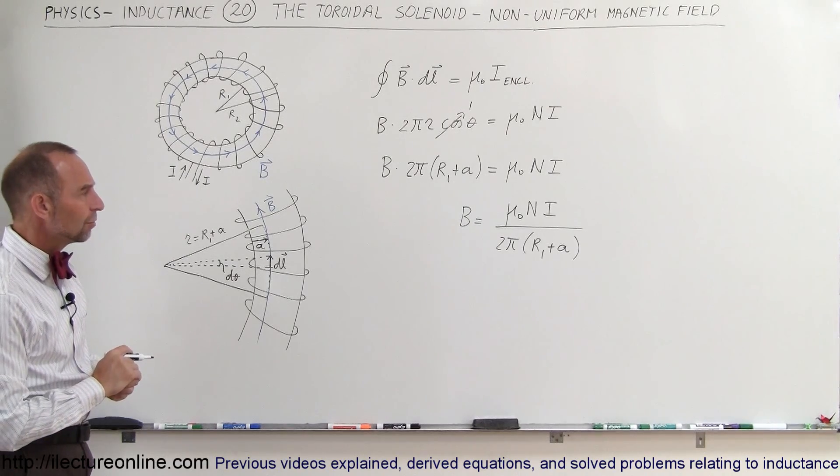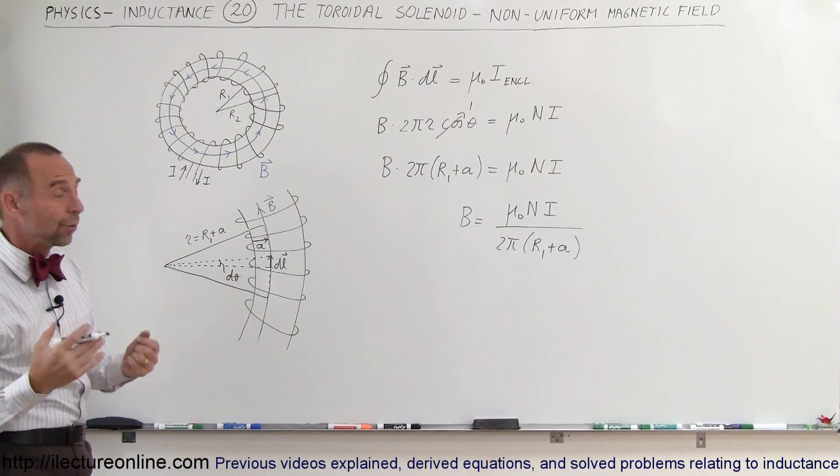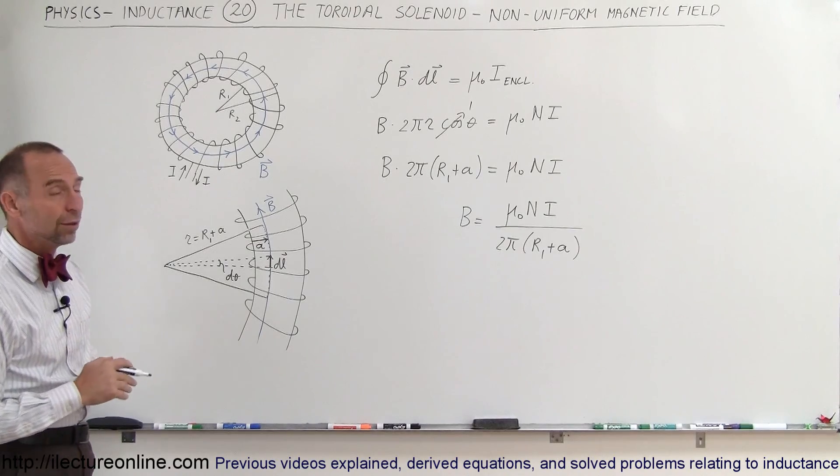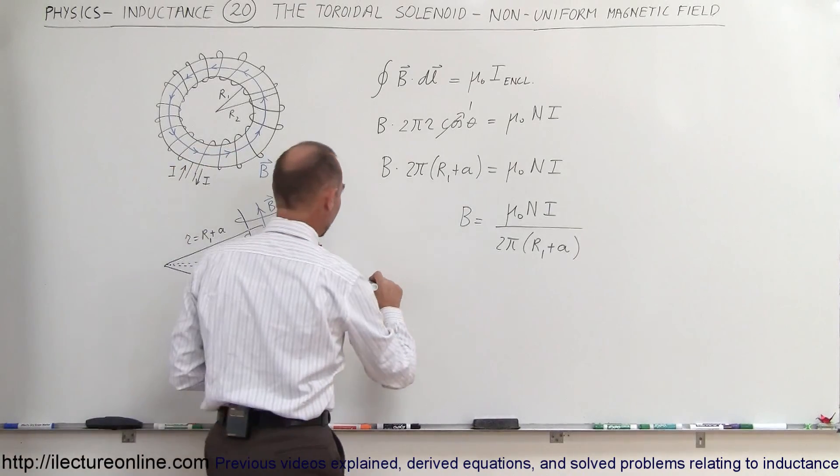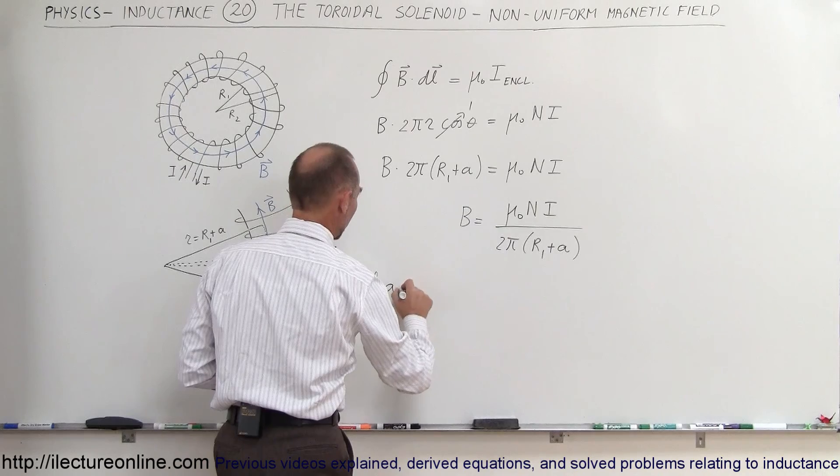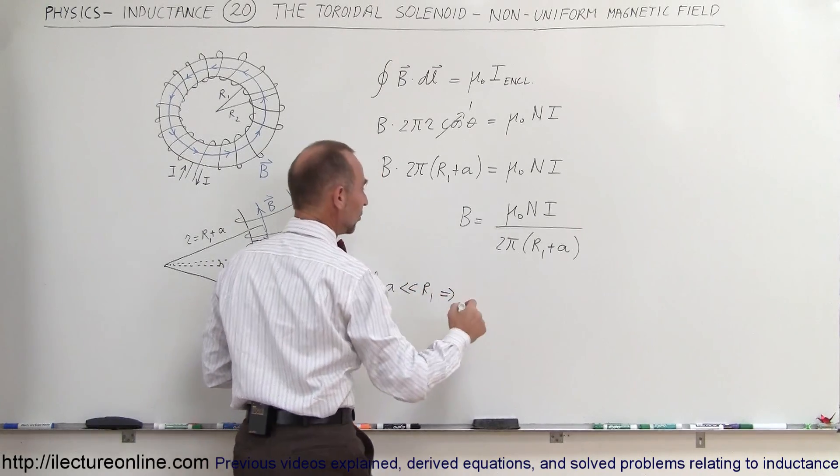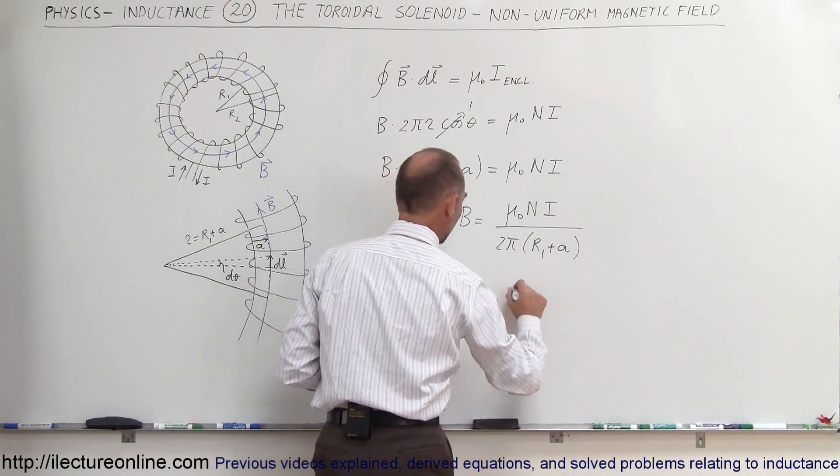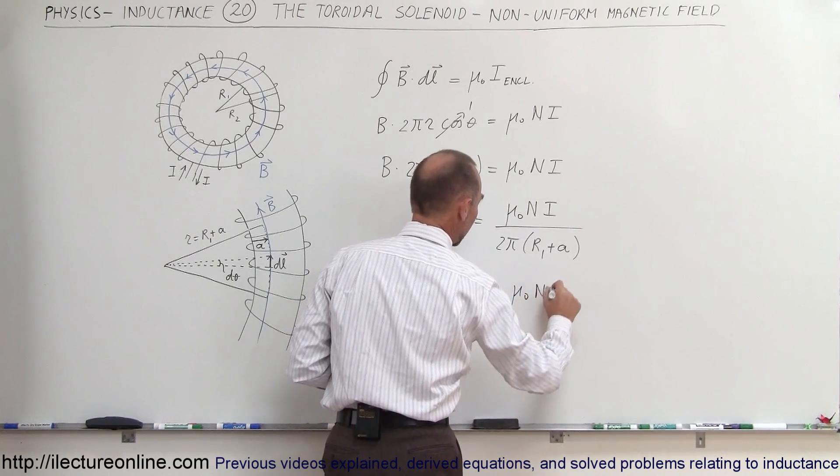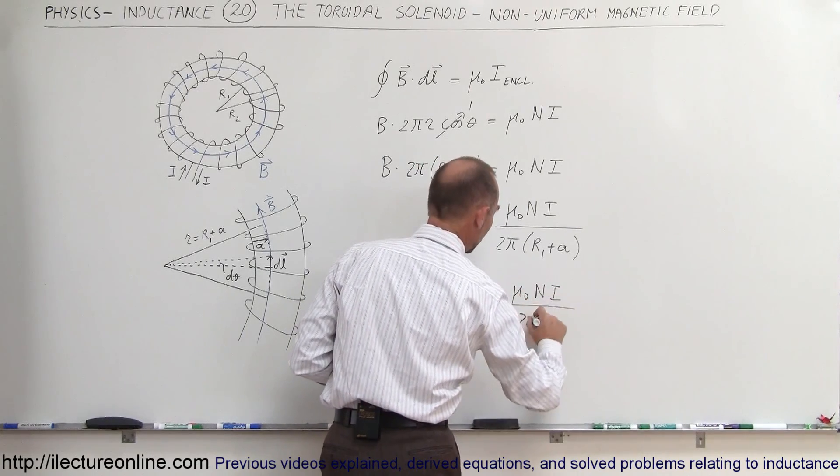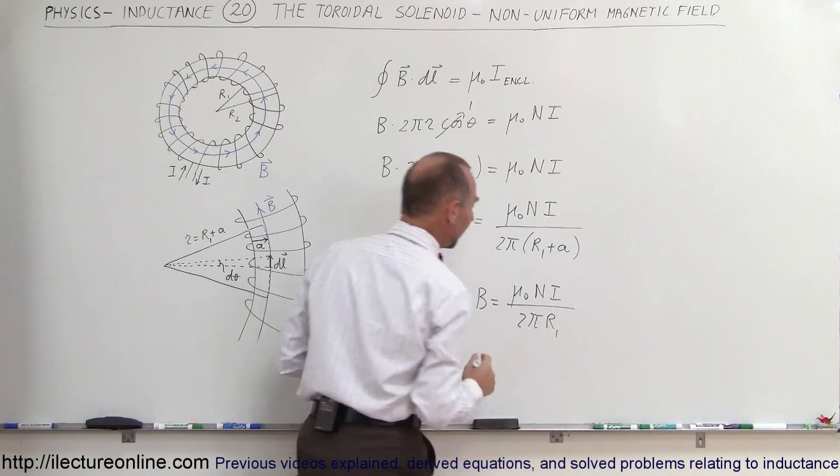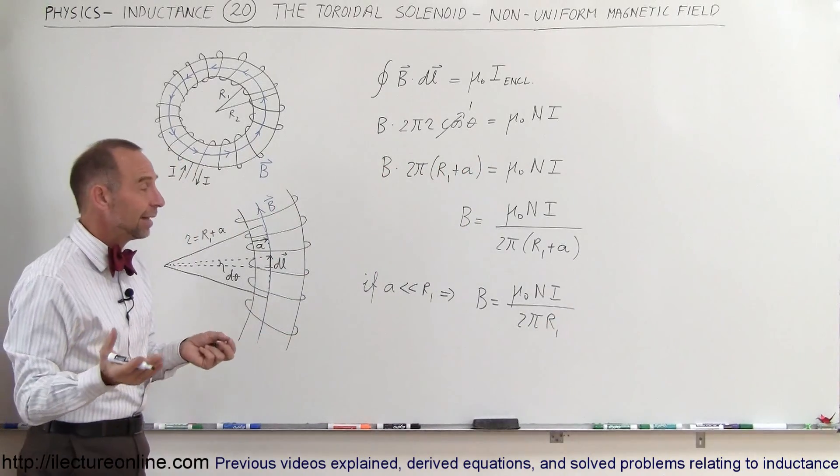Now another thing we can do is let's say that if A becomes very very small compared to r1 what happens now? So if A is much much smaller than r1 then this equation then becomes B is equal to mu sub naut n times I divided by 2 pi times r1.